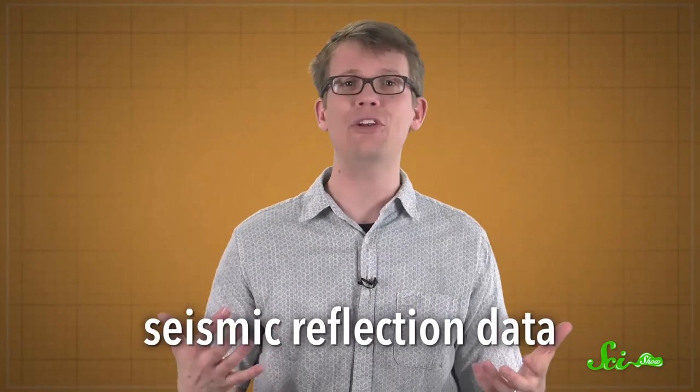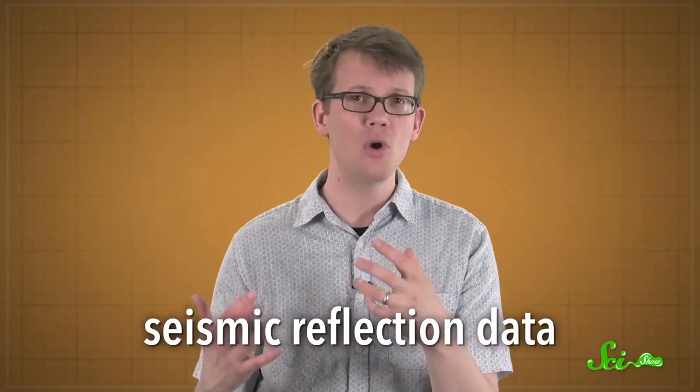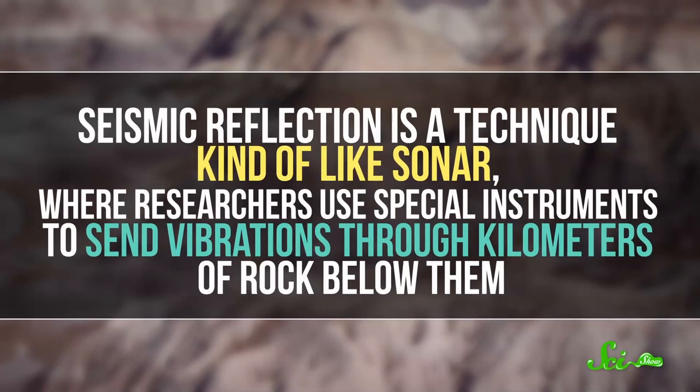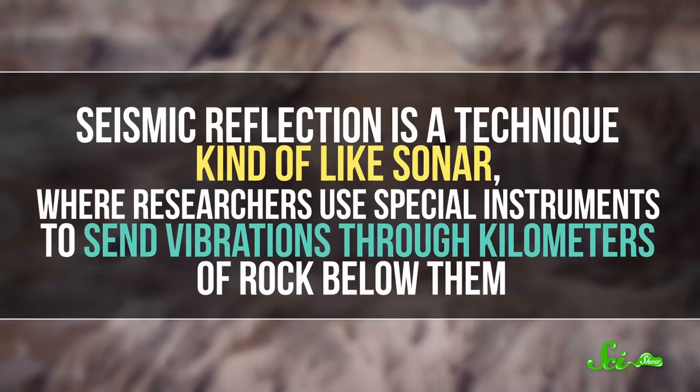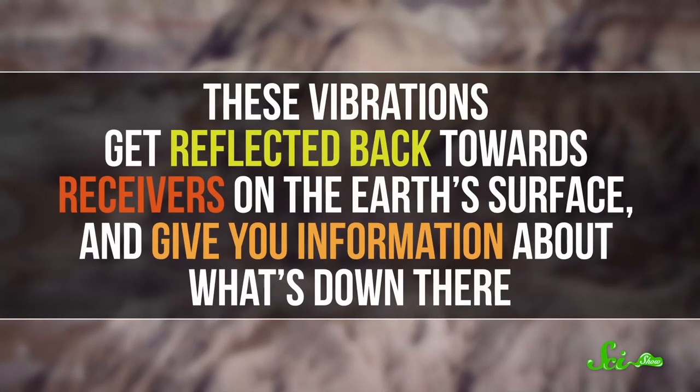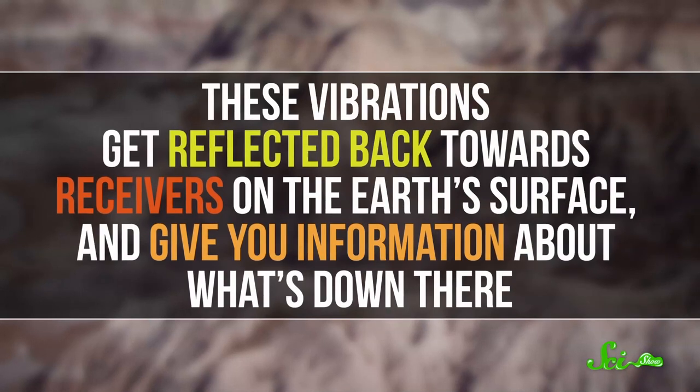The scientists who published the paper last week used what's known as seismic reflection data to map the Earth's crust in some of the known hotspots in the central U.S. Seismic reflection is a technique kind of like sonar, where researchers use special instruments to send vibrations through kilometers of rock below them. Basically, these vibrations get reflected back towards the receivers on the Earth's surface, and give you information about what's down there. It can be used to find things like natural gas and oil deposits. But seismologists and geophysicists use it to get an idea of what sort of rock is below the surface, and how old it is based on how deep it is and how intact the layers are.